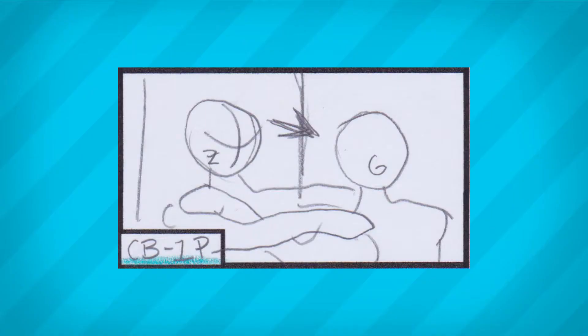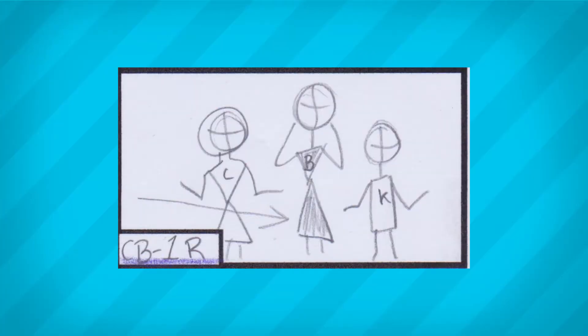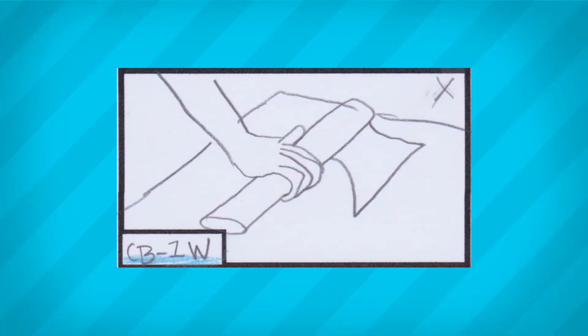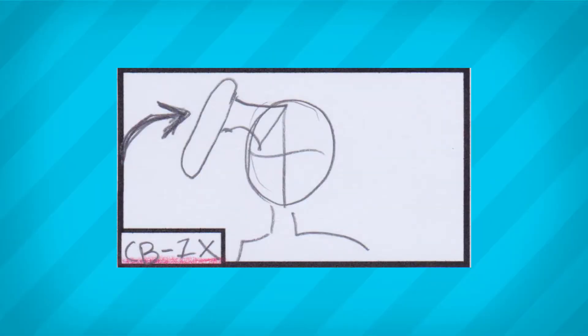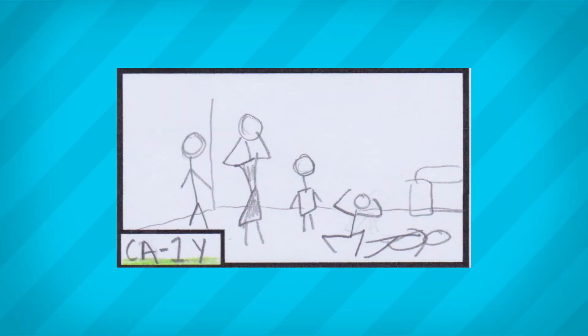You should storyboard your shots in chronological story order to match the script. This can also help visualize how the shots will cut together and be used in an animatic to test to see if the scene is working.